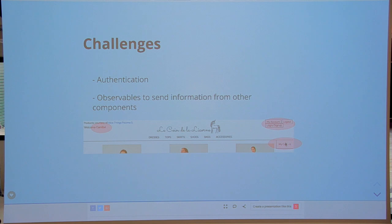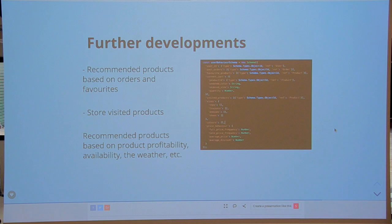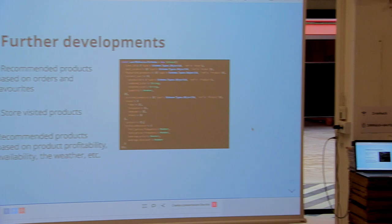For further development, I would really like to implement recommended products based on orders and favorites — the types of products that the user has bought. I'd like to store visited products to base recommendations on that, and also recommend products based on product profitability, availability, the weather, and whatever is interesting to the business.